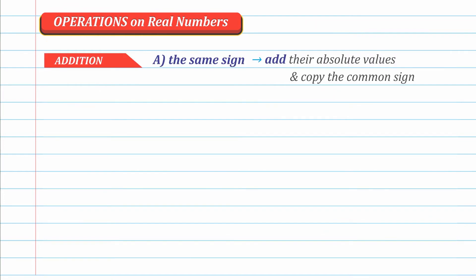Let us now learn other ways to easily add or subtract signed numbers — let's master addition first, because once we master this, subtraction will be easy. There are only two cases in addition of signed numbers. Case A is when the addends have the same sign. There are always two steps: first, add their absolute values; second, copy the common sign. Notice that absolute values are important here — that's why we studied them first.